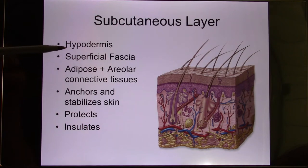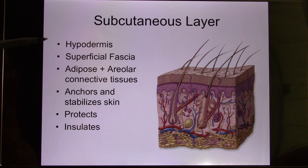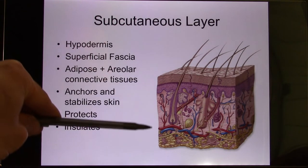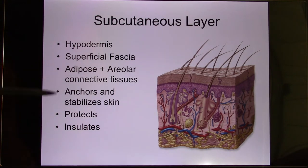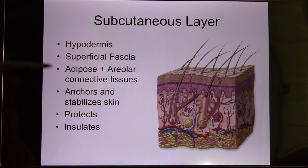Some animals can have normal activity in the winter because they have a lot of fat in this tissue, in this layer. The functions of this fat layer are to stabilize skin, protect, and insulate.